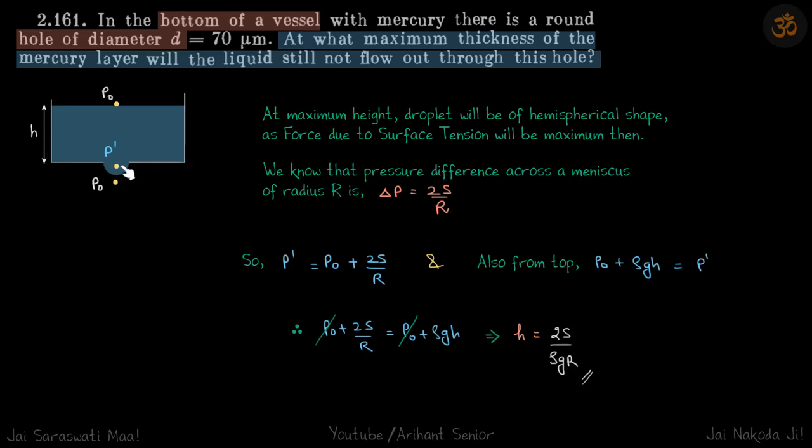We're going to write the pressure inside this drop going from here and going from the bottom. Going from the bottom, the pressure p' is p₀ + 2S/R because of the shape of the meniscus. When we arrive at this point from the top, we have p₀ + ρgh = p'.